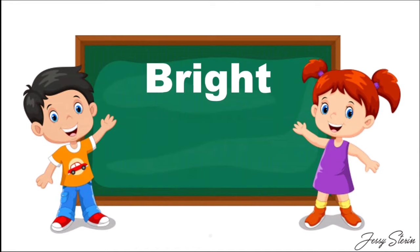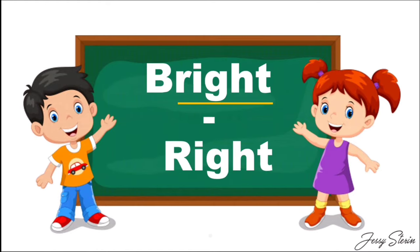Next word is 'bright', B-R-I-G-H-T. Children, can you find out the hidden word? That is 'right', R-I-G-H-T. Write it down — 'right'.